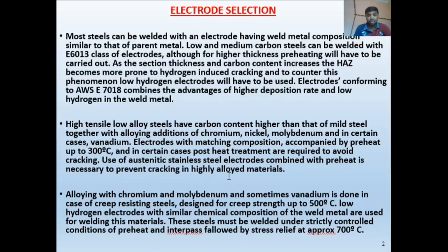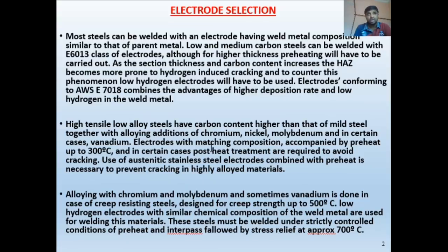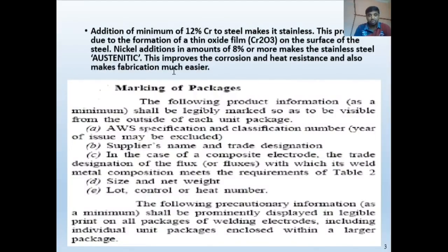Both preheat and post-weld heat treatment are involved in preventing cracking in high alloy materials. Alloying with chromium, molybdenum, and sometimes vanadium is done for creep-resistant steels. Low hydrogen electrodes with similar chemical composition are used. For SS material, refer to ASME Section II Part C and match the base metal chemical composition — the filler should be equal to or have higher mechanical properties than the base metal.